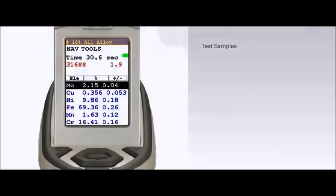Here you see the reading number, which identifies the sample reading and the test mode used for the measurement. The reading number for this stainless steel sample is 164, and we tested in the alloy mode. The measurement time for this sample was a full 30 seconds.